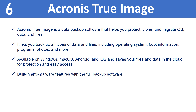The sixth tool is Acronis True Image. Acronis True Image is a data backup software that helps you protect, clone, and migrate OS, data, and files. It lets you back up all types of data including the operating system, boot information, programs, photos, and more. The tool is available on Windows, macOS, Android, and iOS and saves files in the cloud. It includes built-in anti-malware features and supports drive migration from HDD to SSD, SSD to SSD, or between HDDs, as well as data transfer from iOS to Android and vice versa.